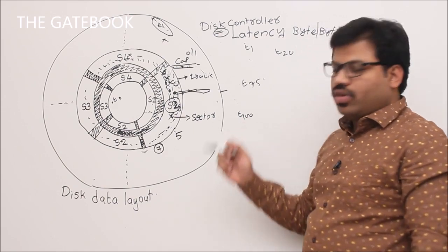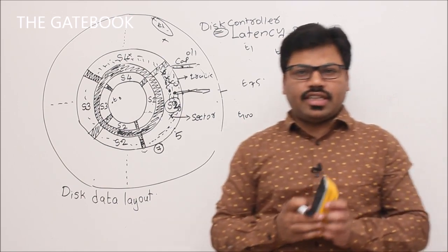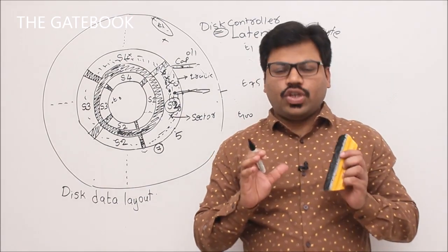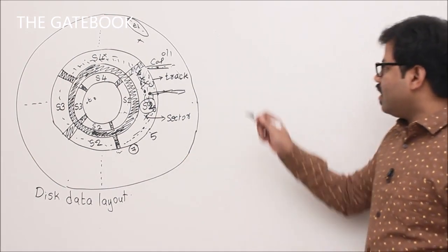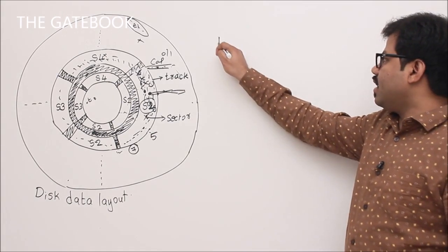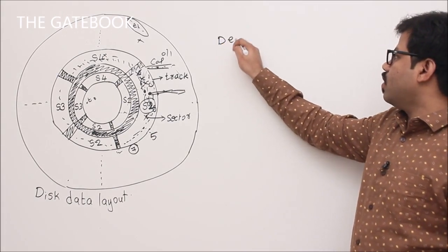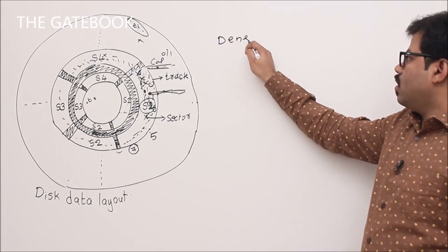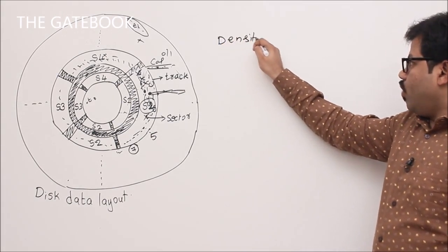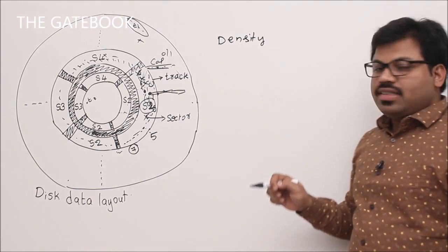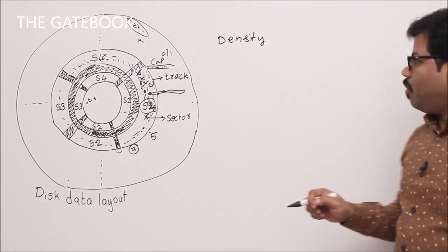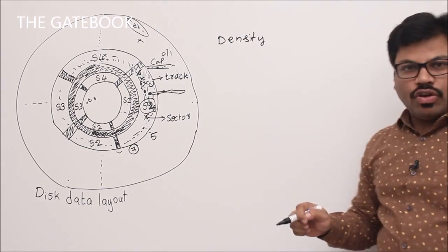We will see a numerical example showing the difference between storing data randomly versus continuously — you'll realize that sequential storage has a significant impact on performance. Now let's look at one more parameter: density.